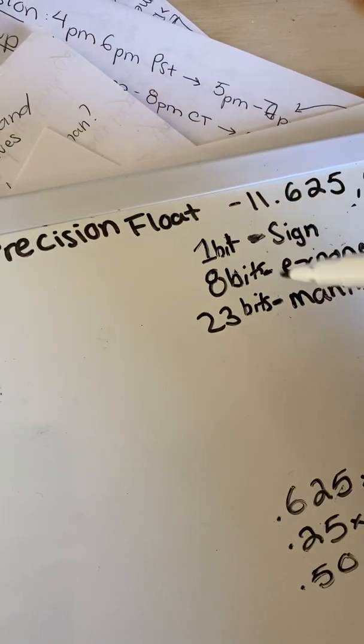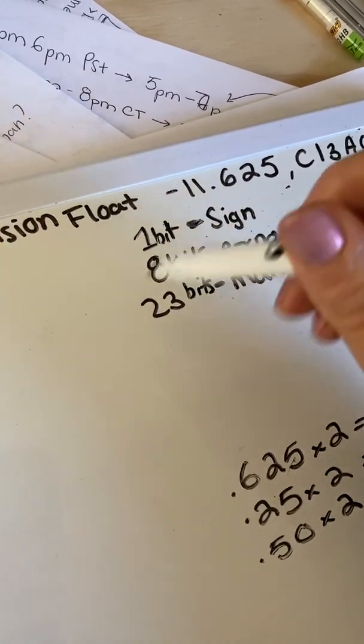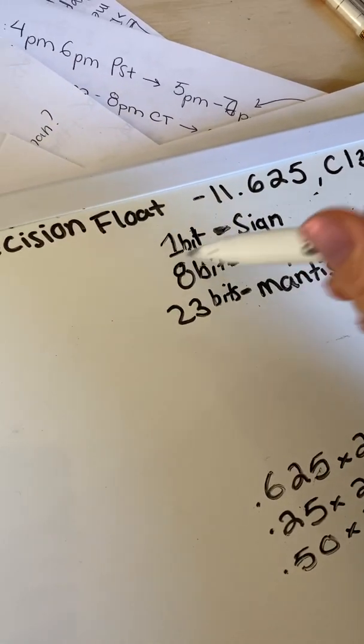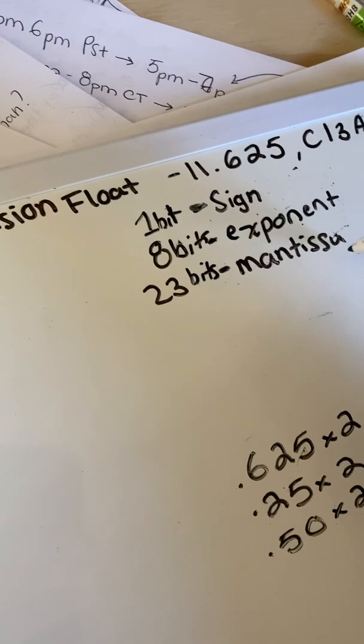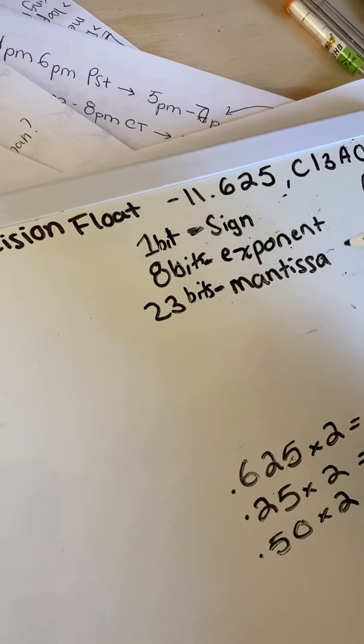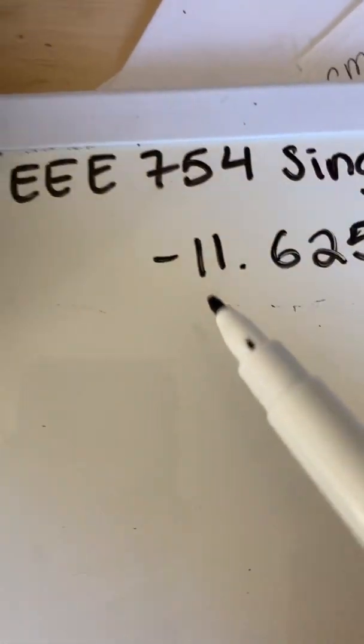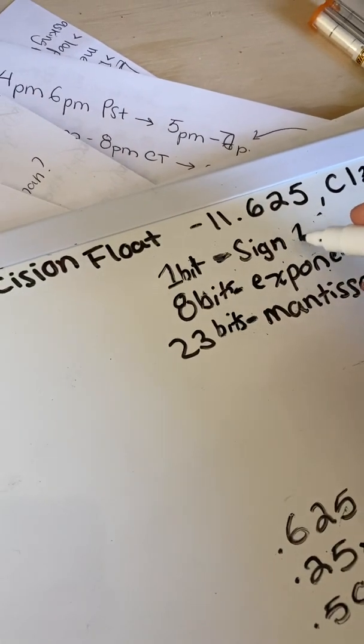The way that we do this is we manipulate these values, like the exponent and the mantissa, in such a way that it will always equal 8 bits. So the sign, we're going to get that by looking at what the sign is here. Since it's negative, it's going to be a 1. If it was positive, it would be a 0.